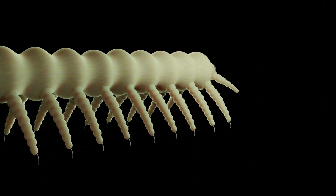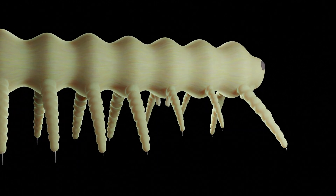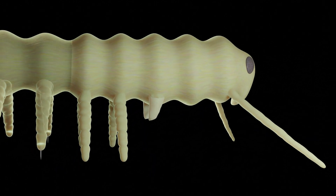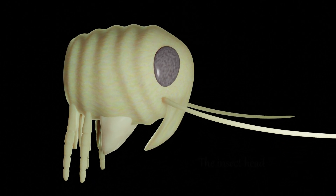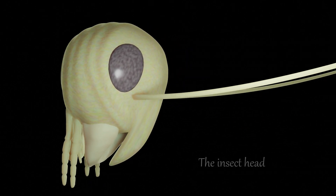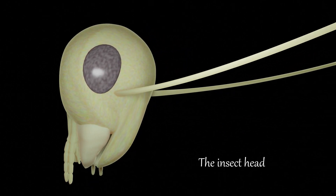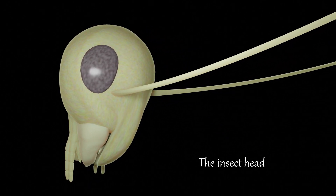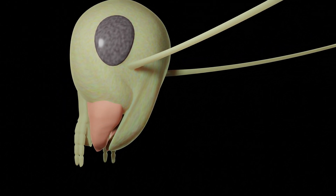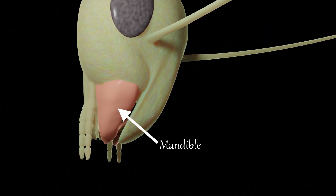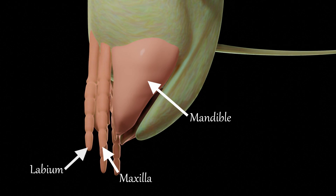He went on to discover that the appendages of arthropods can take on completely different forms. Savigny realized that the mouthparts of all insects share the same appendages — these are the mandibles, maxillae, and the labium.